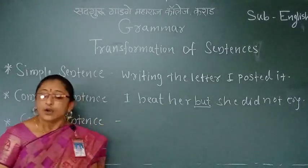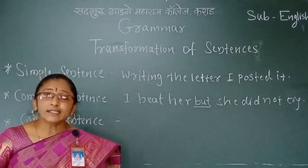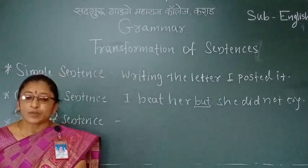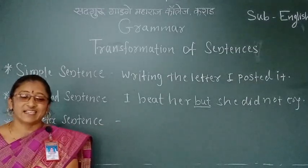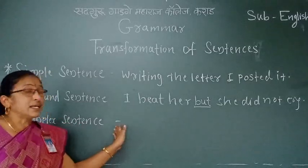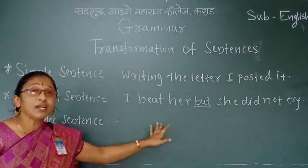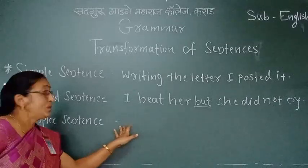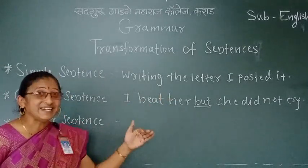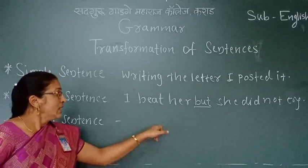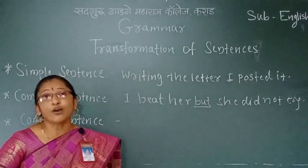The third type is complex sentence — mishra vakya. A sentence which is made up of one main clause and one or more subordinate clauses is called a complex sentence. The subordinate clause in a complex sentence depends on the main clause. In compound sentence there are two independent main clauses, but in complex sentence the subordinate clause depends on the main clause.